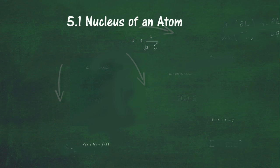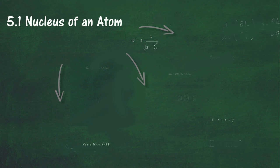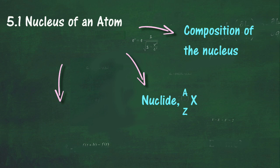In Section 5.1, we will learn about the Nucleus of an Atom. At the end of this section, you should be able to describe the composition of the nucleus of an atom in terms of protons and neutrons, define proton number Z and nucleon number A, explain the term nuclide and use the nuclide notation, and define the term isotope.